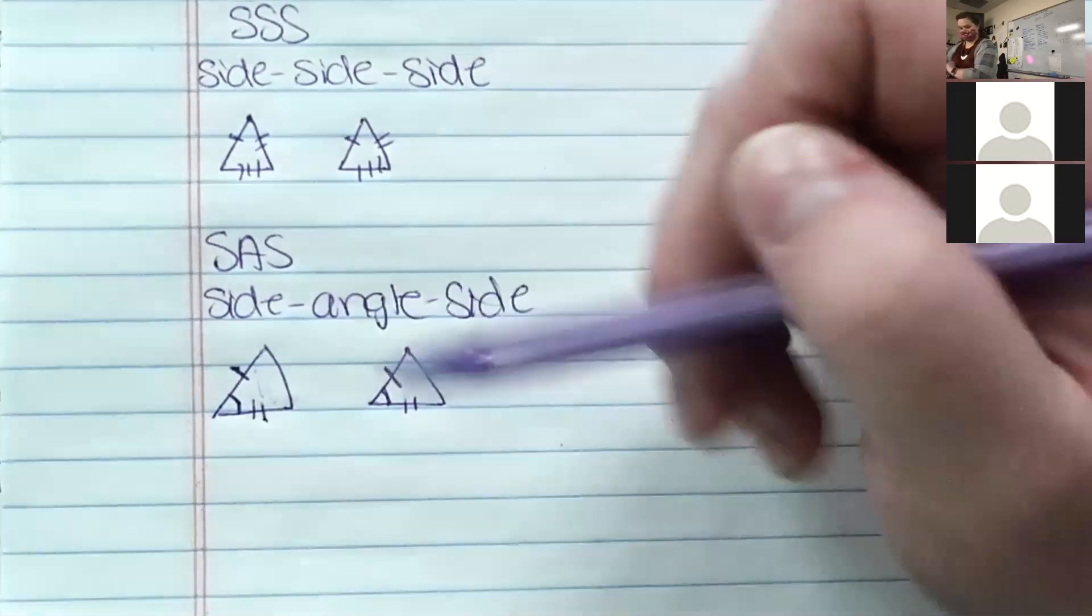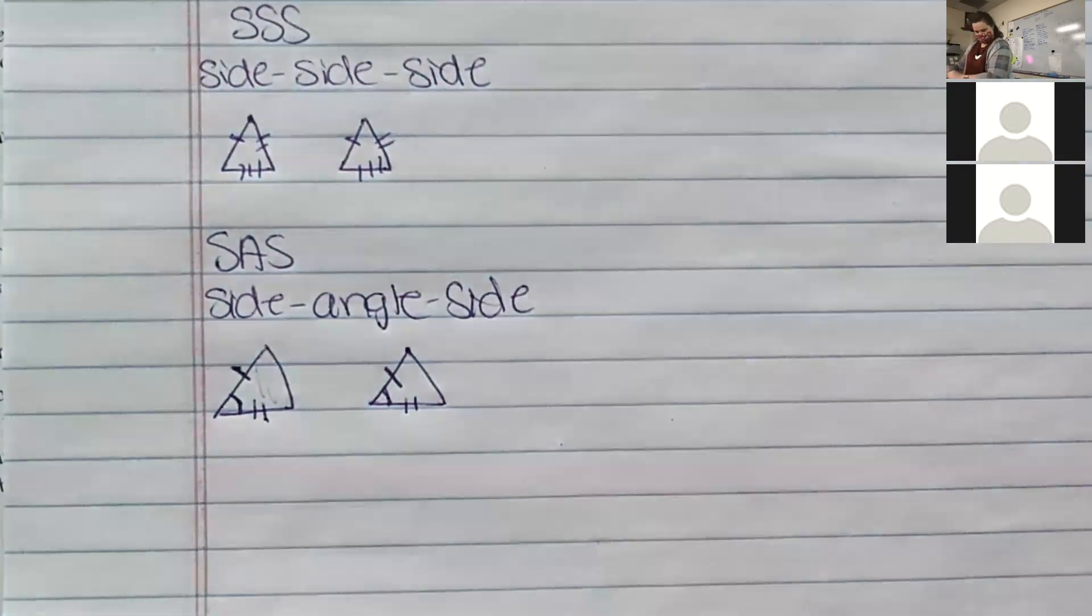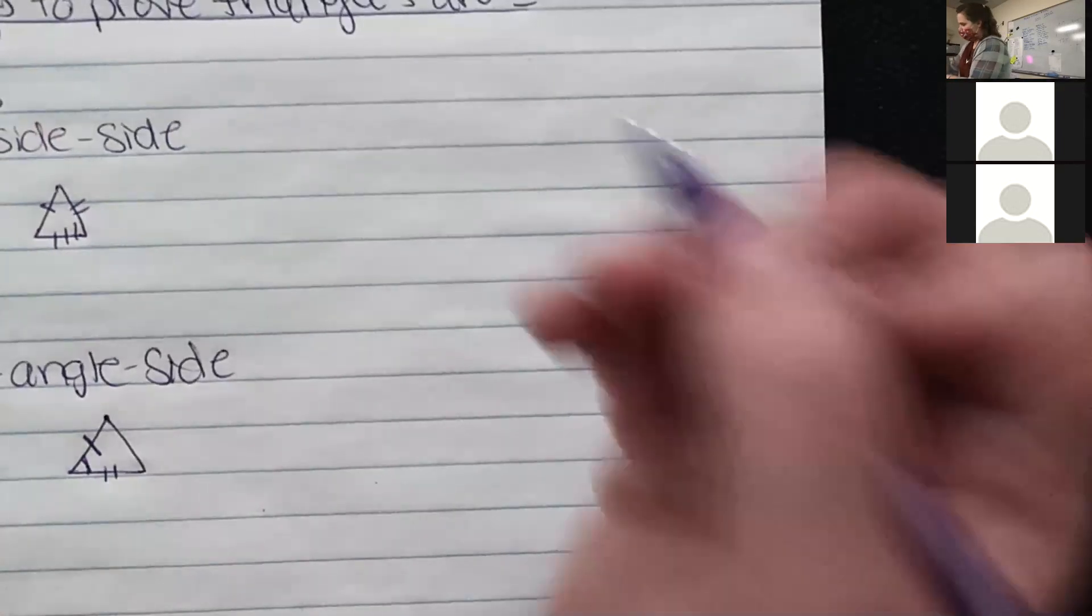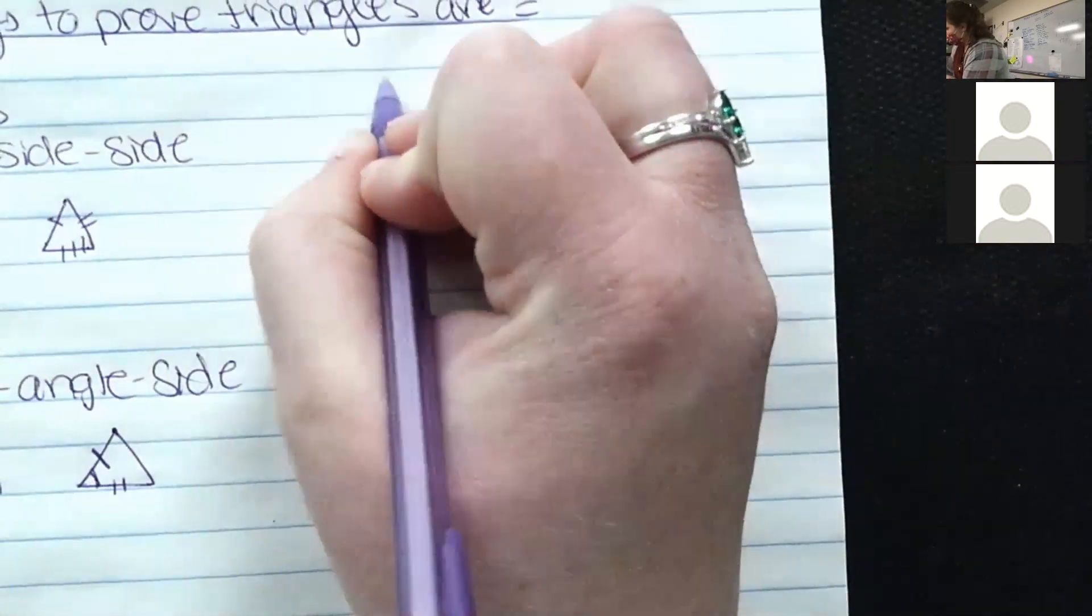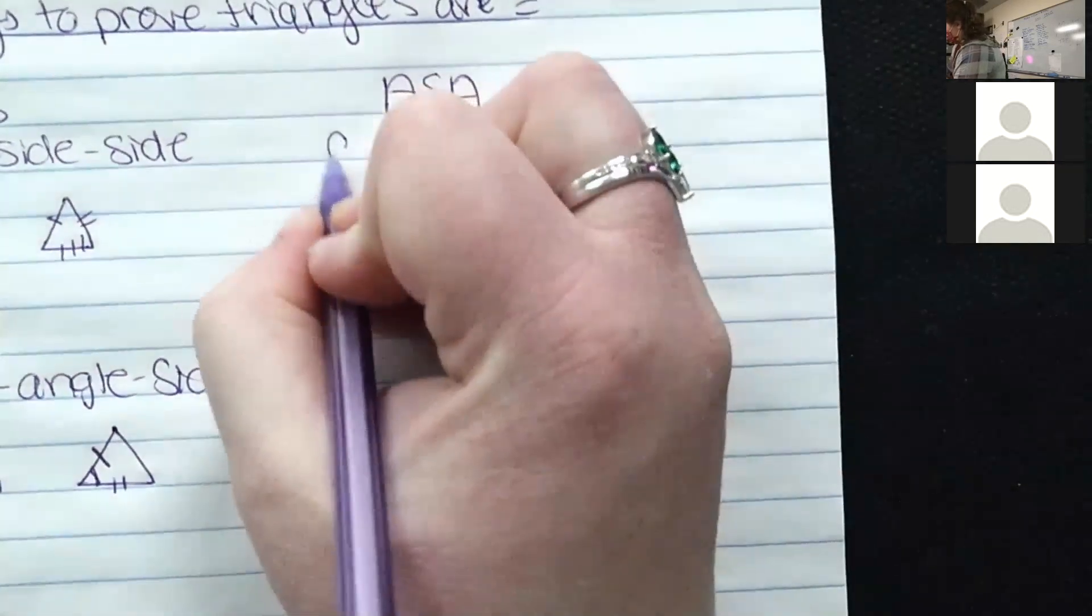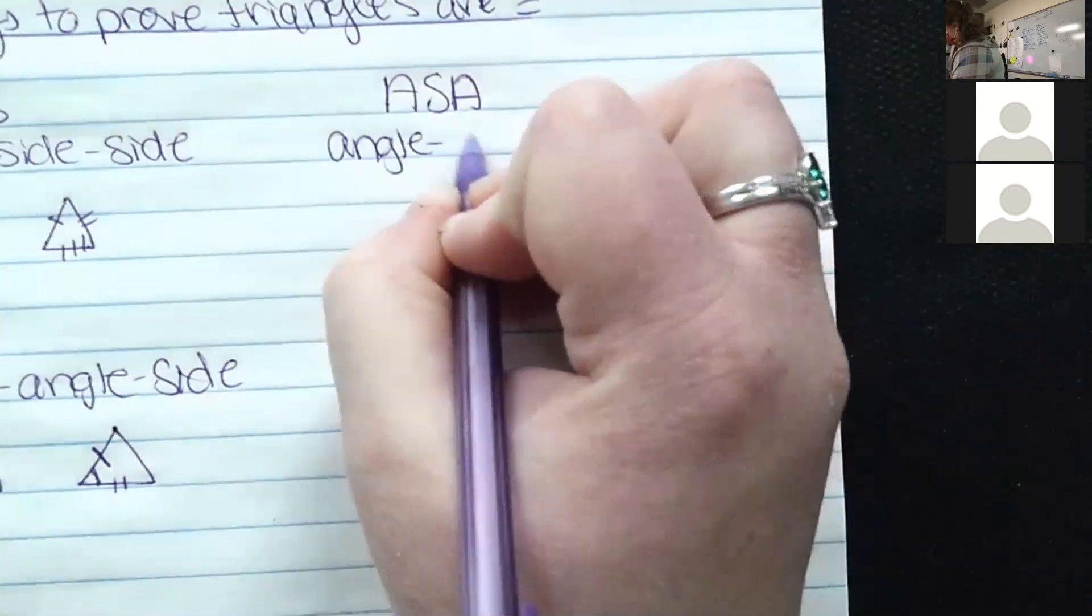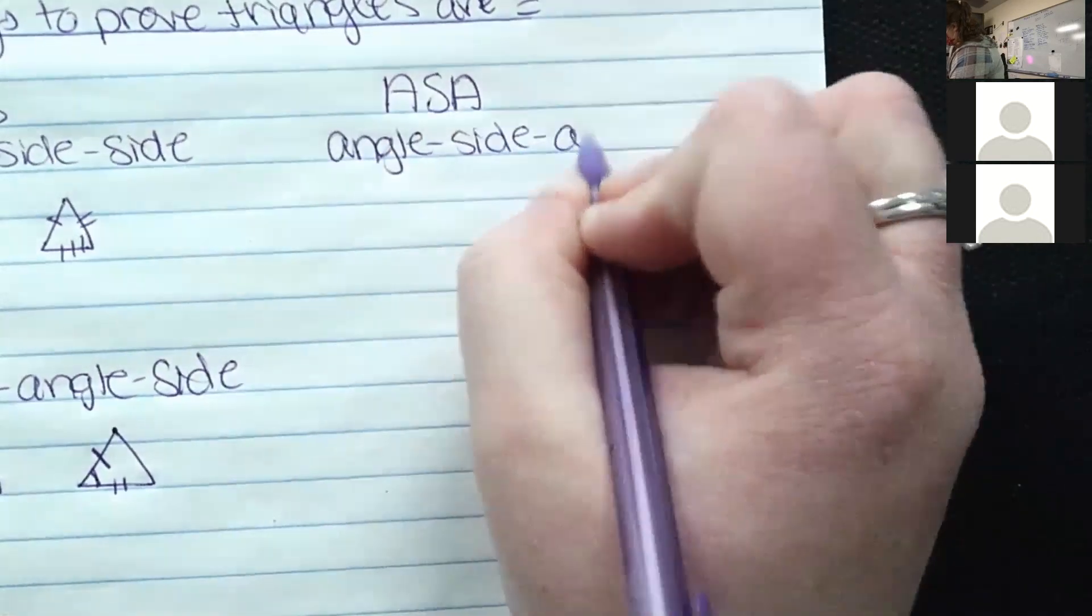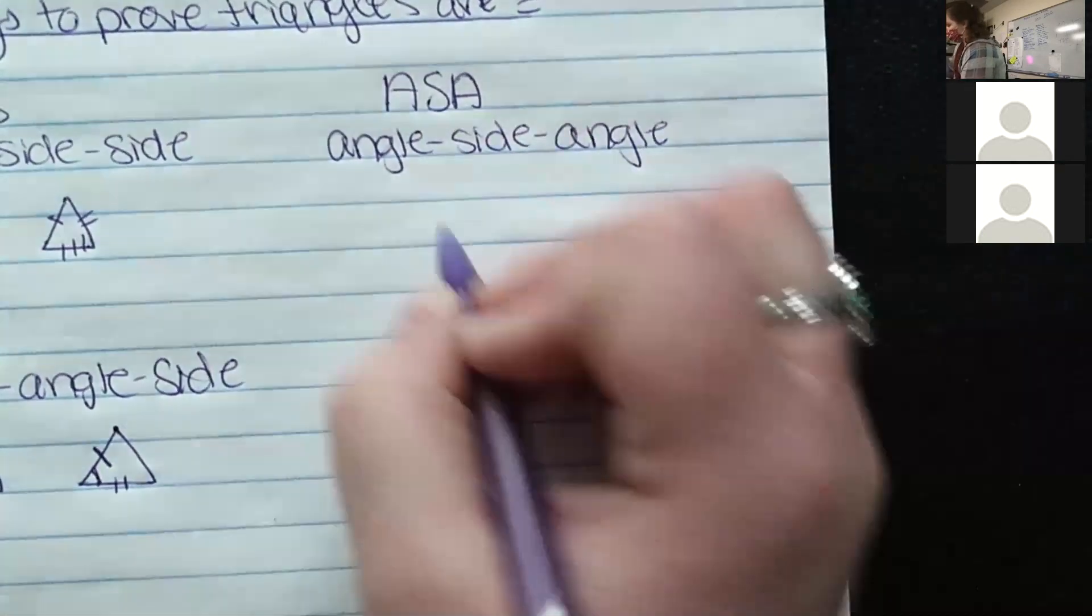And I'll show you why in a little bit. So that's two, we got two more. Now I'm going to move over. We'll do ASA. What do you think that stands for? Angle-side-angle. So again, order matters.